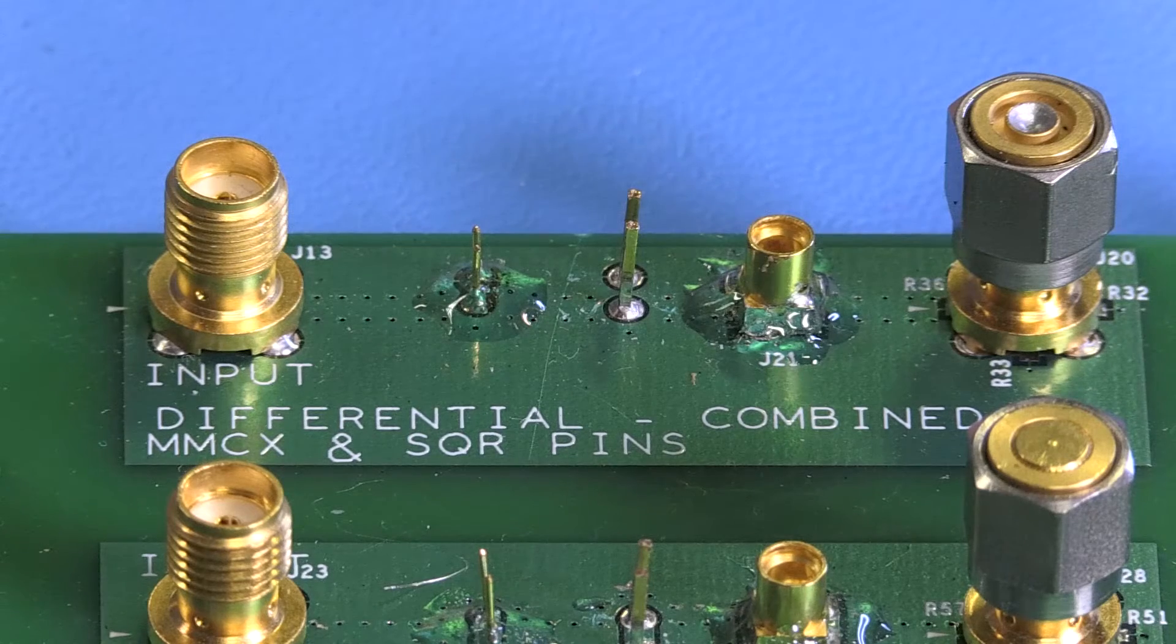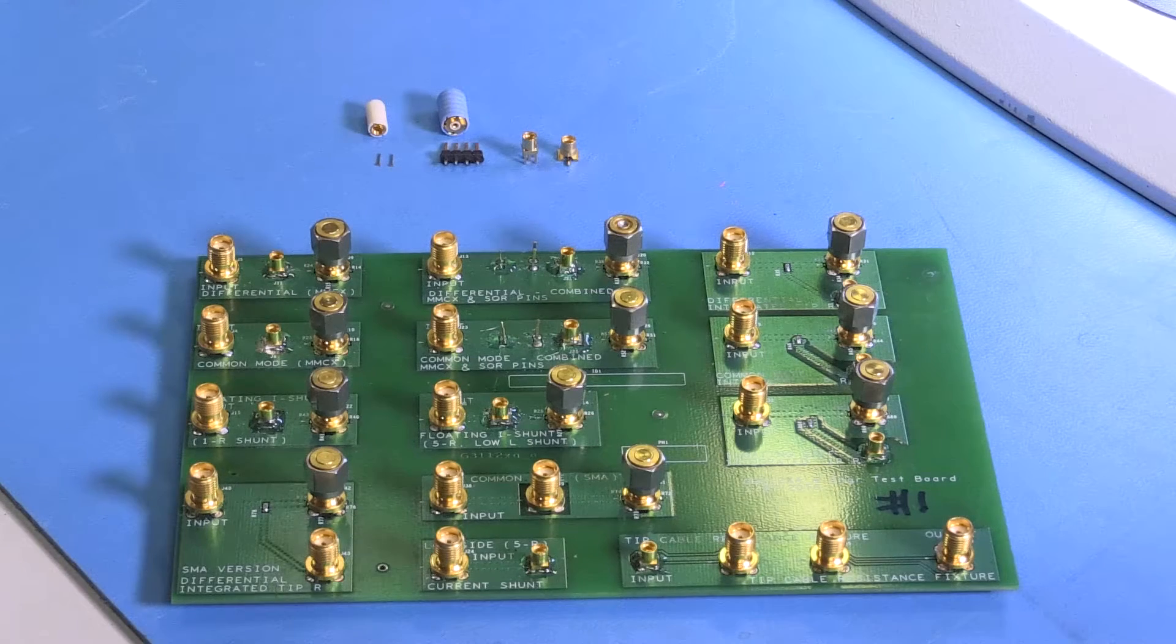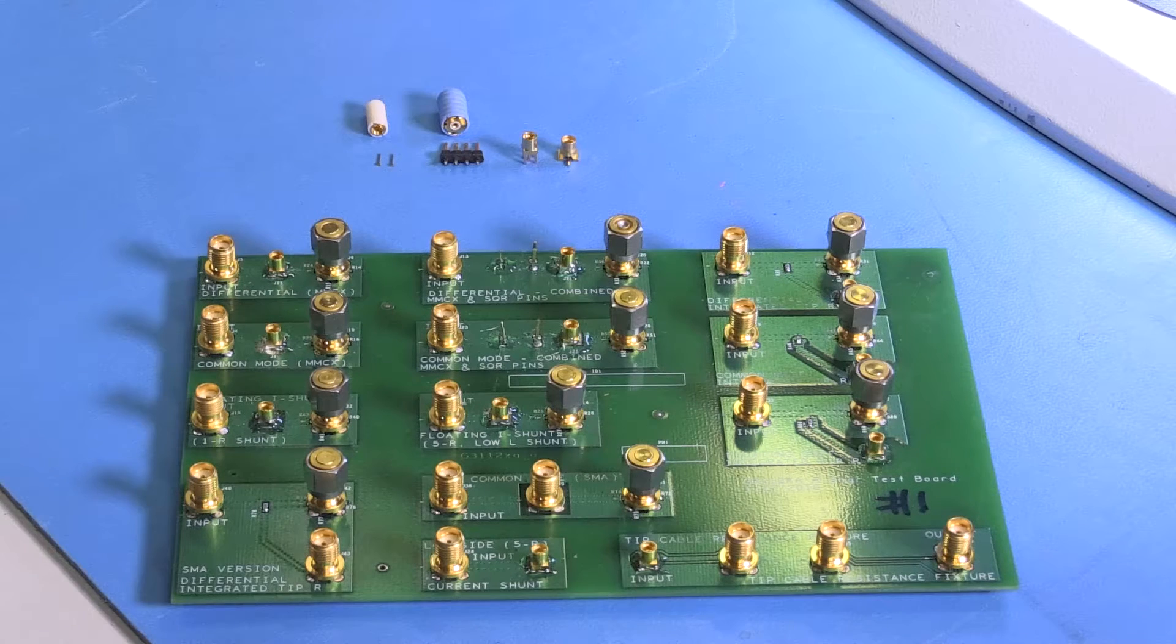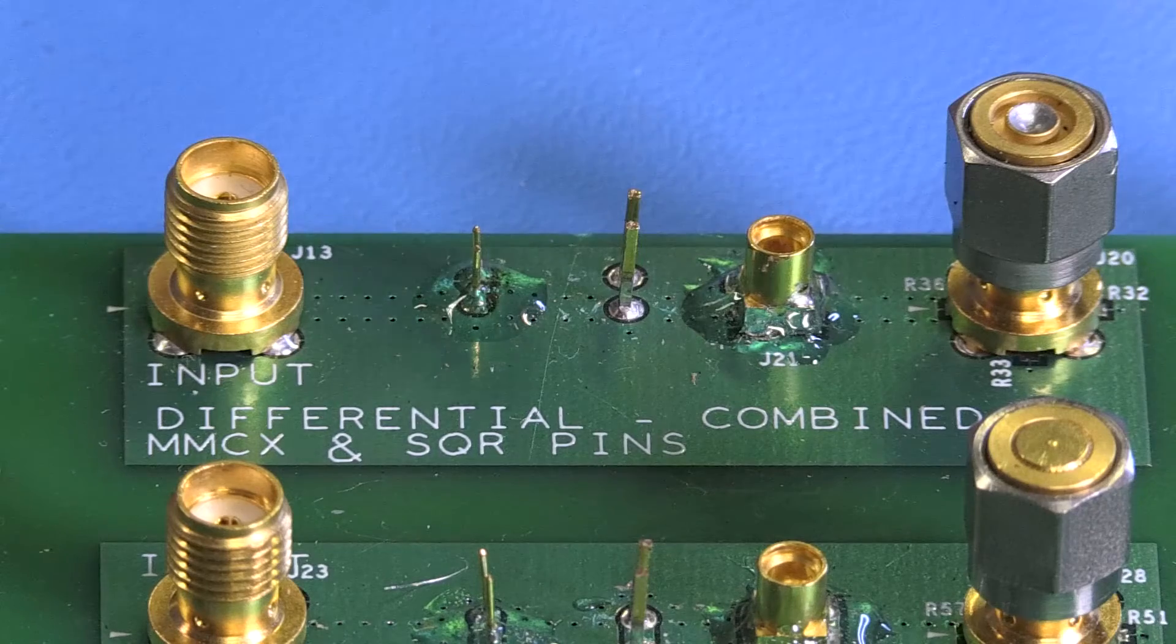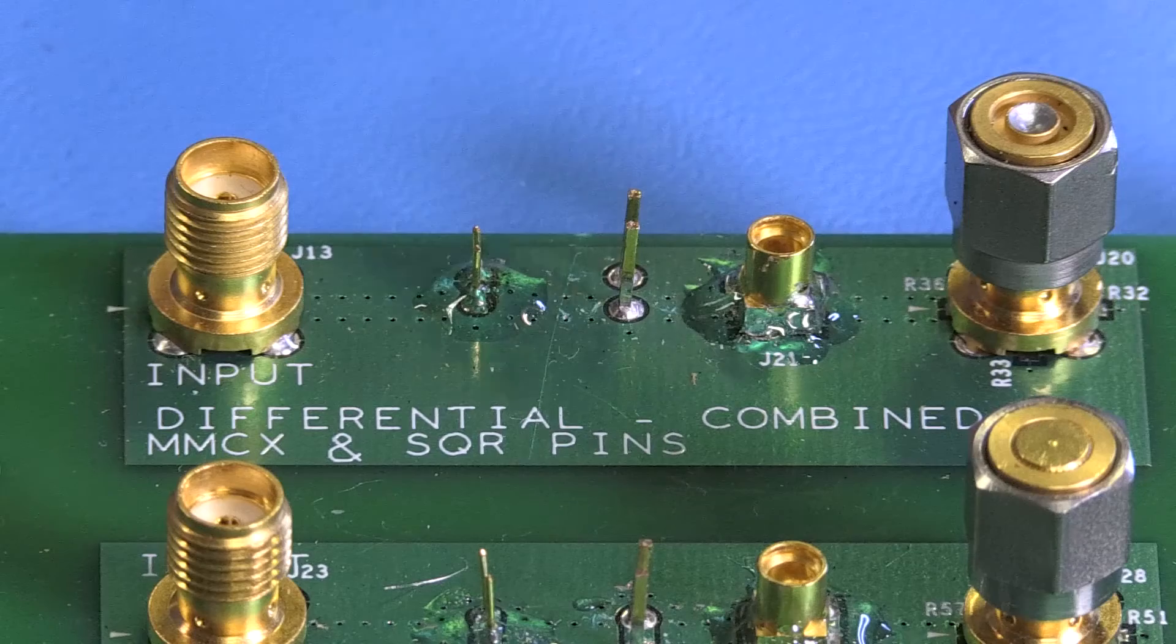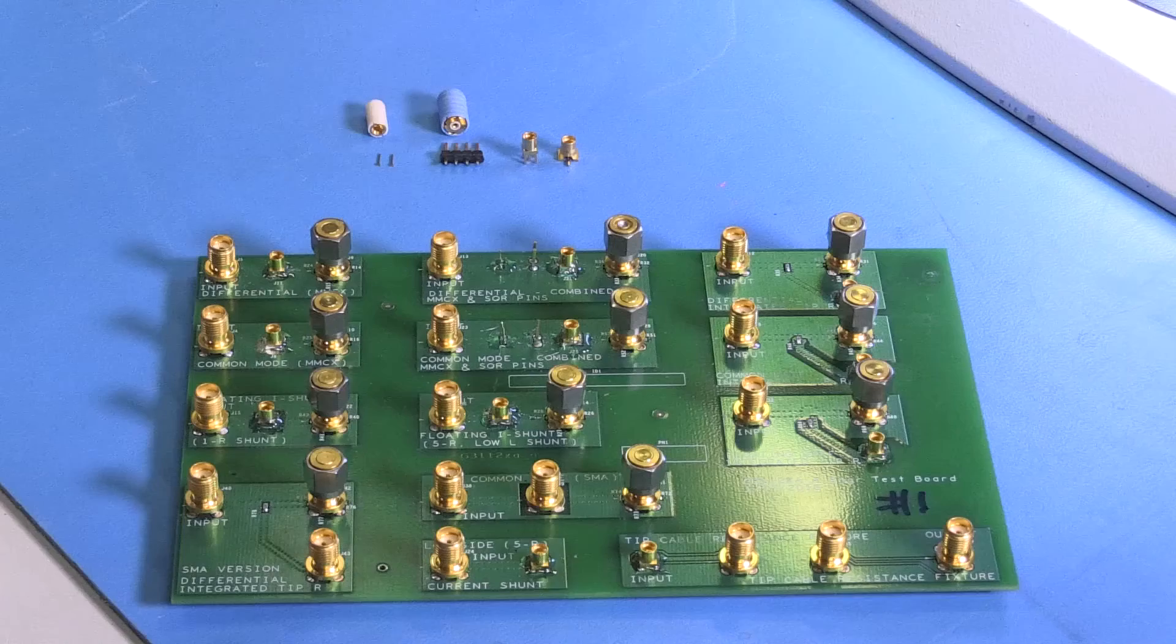It is also possible to use this type of connector as an unplanned test point and we will show you how to do that in the next video in this series. One of the other connection techniques that we're introducing is some small 18 mil diameter round pins. We've included these in order to make it easier to measure the voltage drop across an 0402 or smaller size surface mount component.